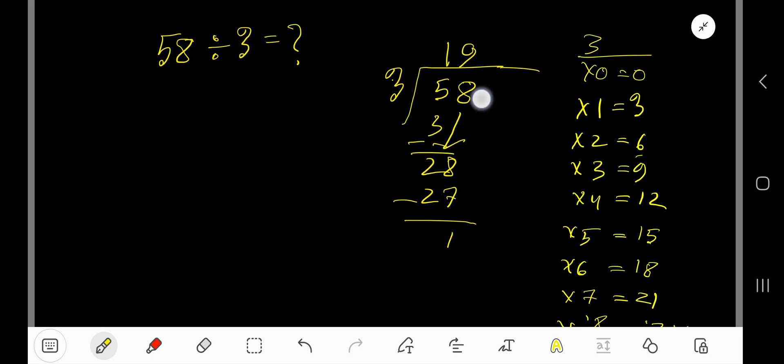But if you want to write your answer in decimal form, take a decimal here and add zeros. Bring down the first zero. Before this zero there is a decimal. The decimal must come to the quotient directly.